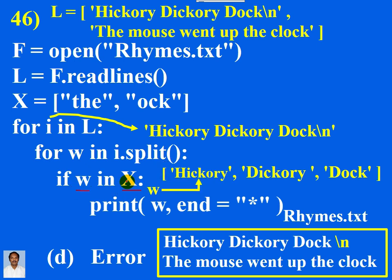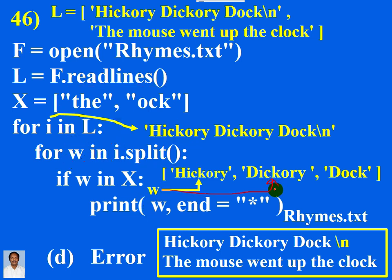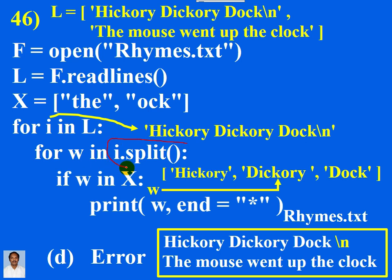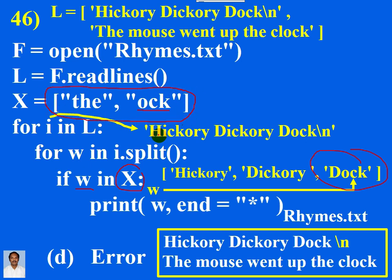Now checking: if hickory in x — hickory is not in x, so condition is false, not executed. Next word is dickory — also not in x, condition false, not executed. Last element, w contains 'dog'. Dog in x — the list x does not contain an element by the name dog, so condition is false, not executed. No more elements in this list, so we exit from the inner for loop. The outer for loop has not finished execution.